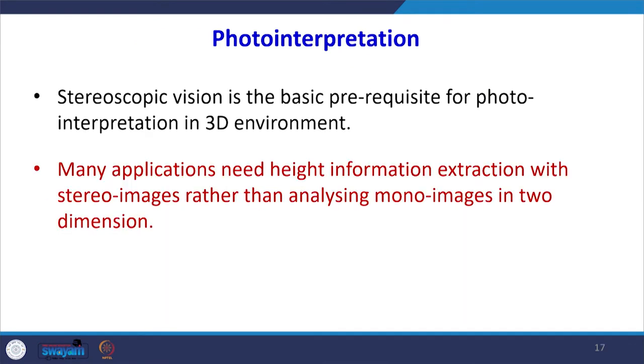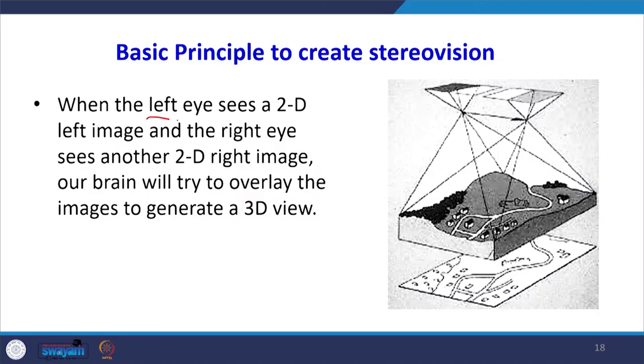When carrying out interpretation of aerial photographs and taking measurements from them, our prerequisite is that you must create stereo vision. When you create stereo vision, you can extract much information that cannot be extracted from a 2D image alone — that is the advantage of using stereo pairs. The basic principle is that the left eye sees a 2D left image and the right eye sees a 2D right image, and fusing these together in the mind generates a 3D view.